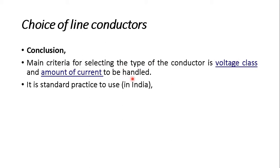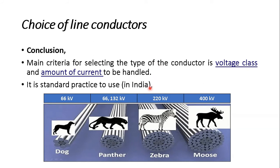In India, standard practice uses the following conductors for different voltage levels: for 66 kV, ACSR Dog conductor is used; for 66 kV or 132 kV, ACSR Panther conductors are used; for 220 kV, ACSR Zebra conductors are used; and for 400 kV, ACSR twin bundle Moose conductors are used. Based on the voltage level and amount of current to flow, we select the appropriate conductor.